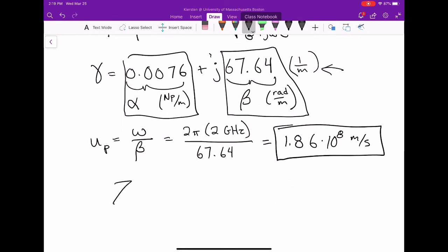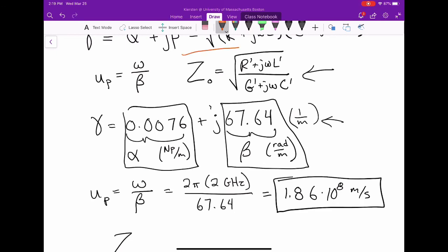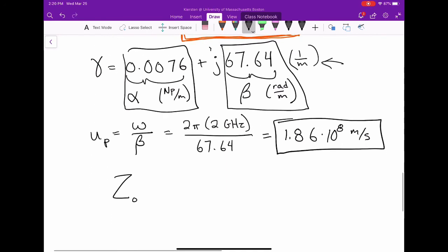Lastly, for the characteristic impedance, we use all the values from problem 2.2 and put all those per unit length parameters into the equation. ω is 2π times 2 gigahertz. We get a characteristic impedance of 253 - j0.0266 ohms, which is almost purely real, as it should be for a good transmission line.